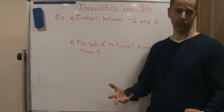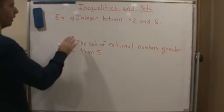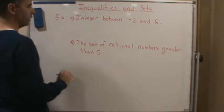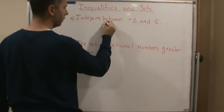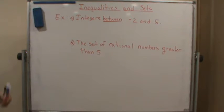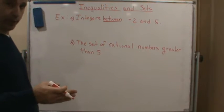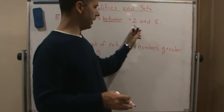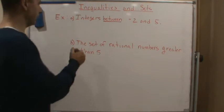So here we want to write the set of integers between negative 2 and 5. Now between, the word between, implies that we're not going to include the endpoints, which means we're not going to include negative 2 and 5 in the set.